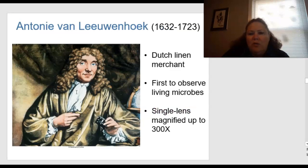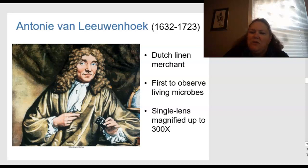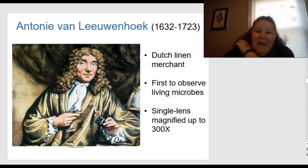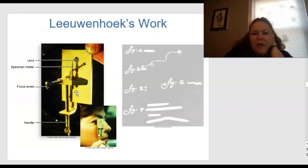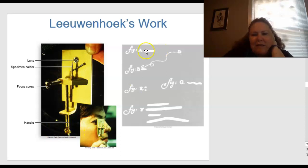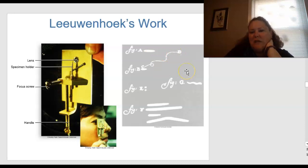Antonie van Leeuwenhoek was a Dutch linen merchant and the first to observe living microbes. He made a single lens that magnified up to 300 times what the naked eye could see — pretty remarkable for the 1600s. His microscope had a lens, specimen holder, focus screw, and handle held up to the eye. Through it he was able to observe cocci, rods, and spirochetes — different types of microorganisms seen for the first time.